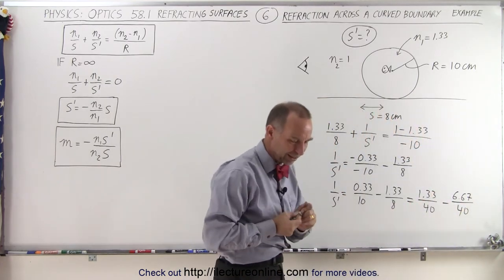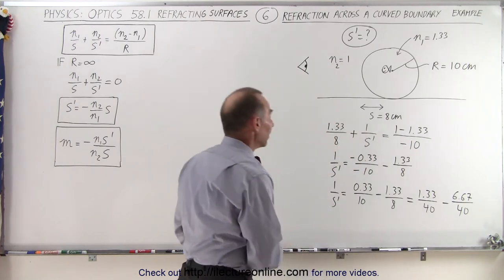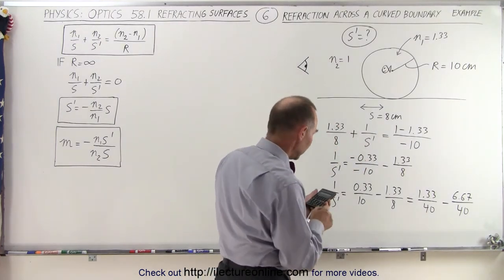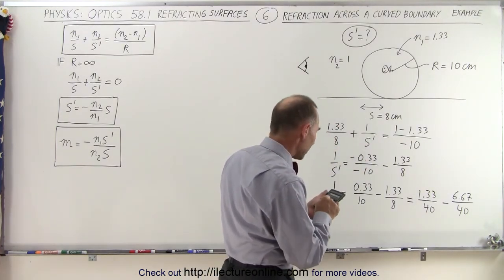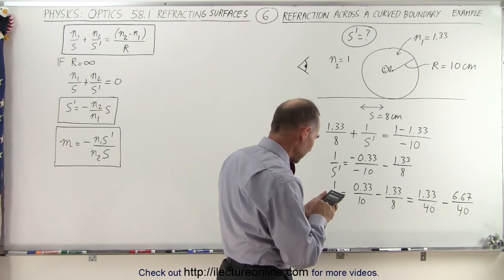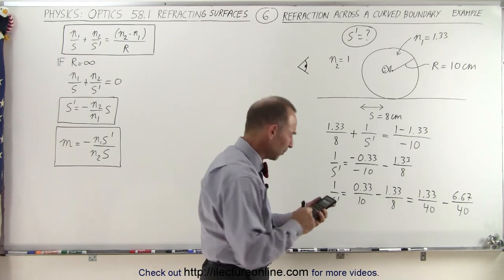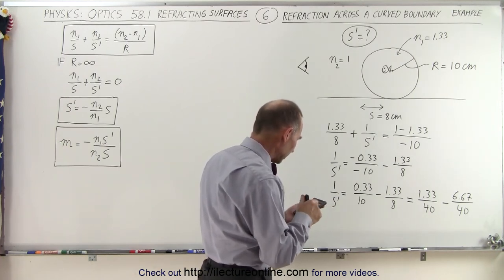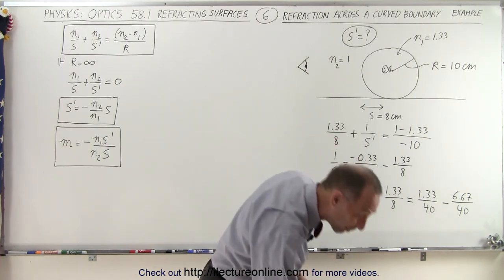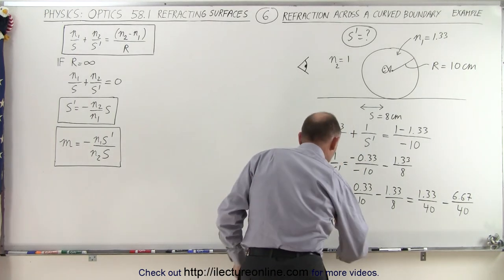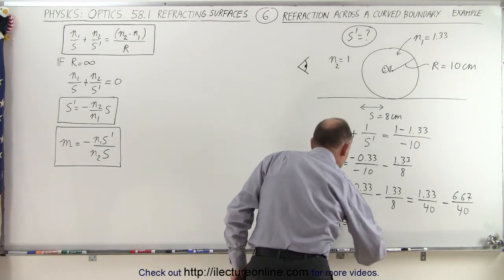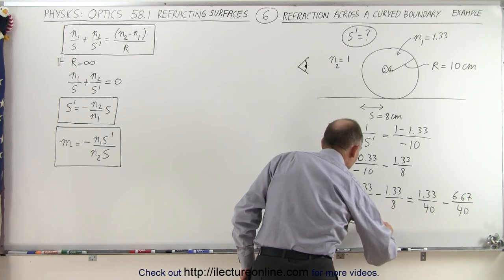I think I did that right, but let's get a calculator and verify. So now we subtract one from the other. So we have 1.33 minus 6.67 divided by 40. And now we need to take the inverse of that. So when we take the inverse, we get 7.5 or S prime is equal to a negative 7.50 centimeters.